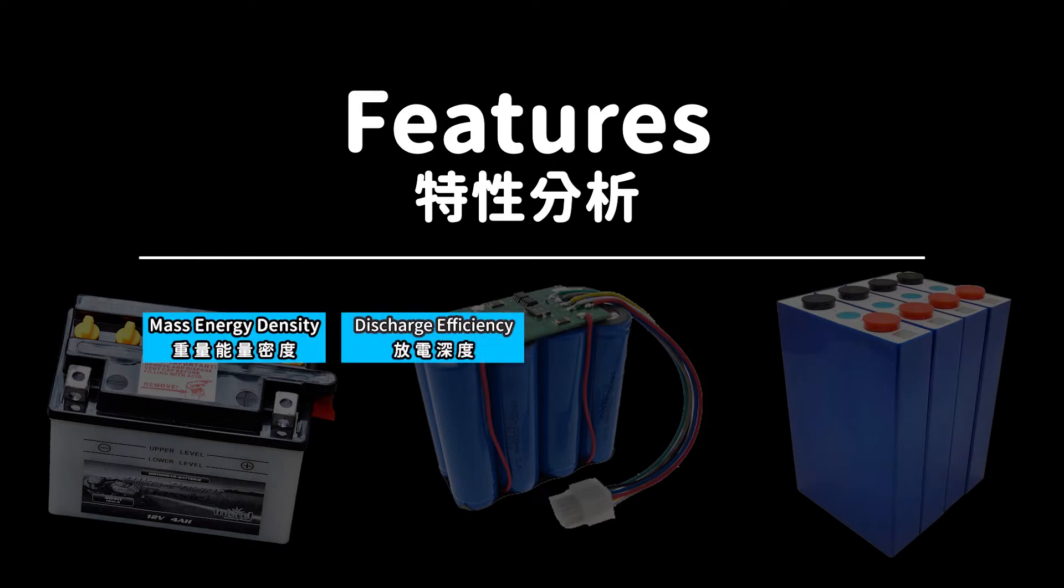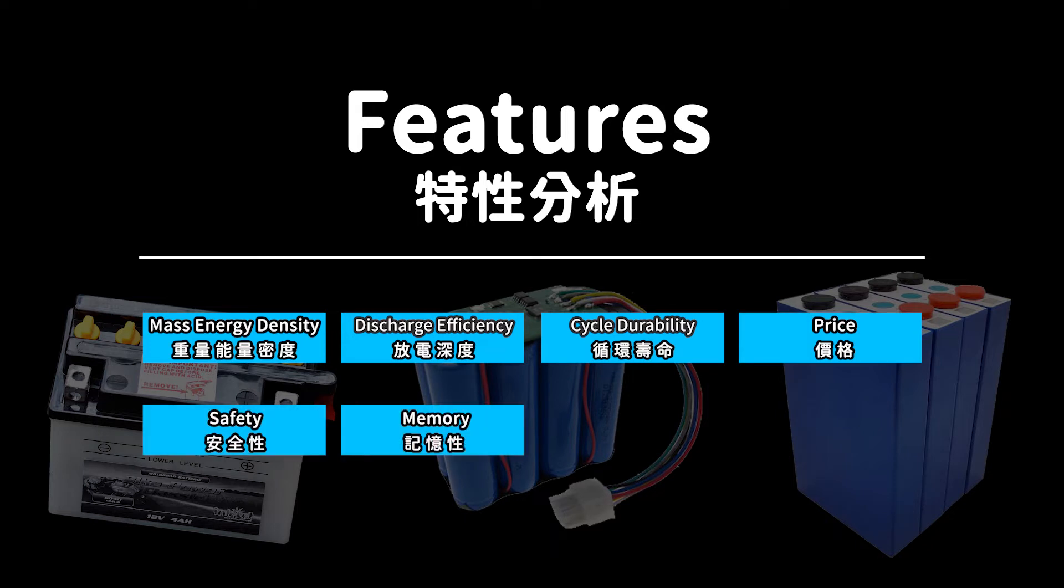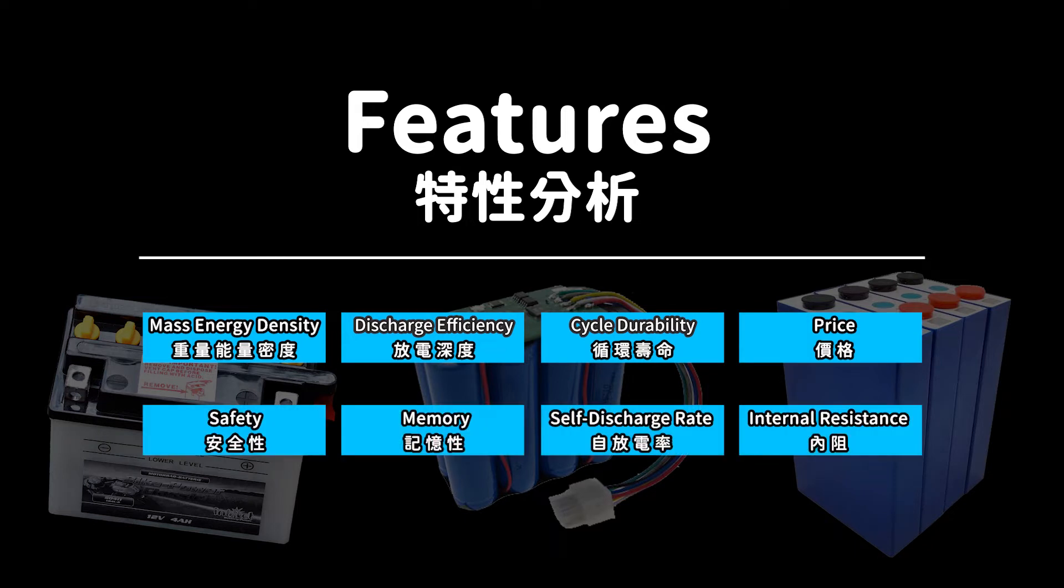Energy density, depth of discharge, cycle life, price, safety, memory, self-discharge, internal resistance. We will analyze 8 characteristics to pick the most suitable battery for van life road trips.